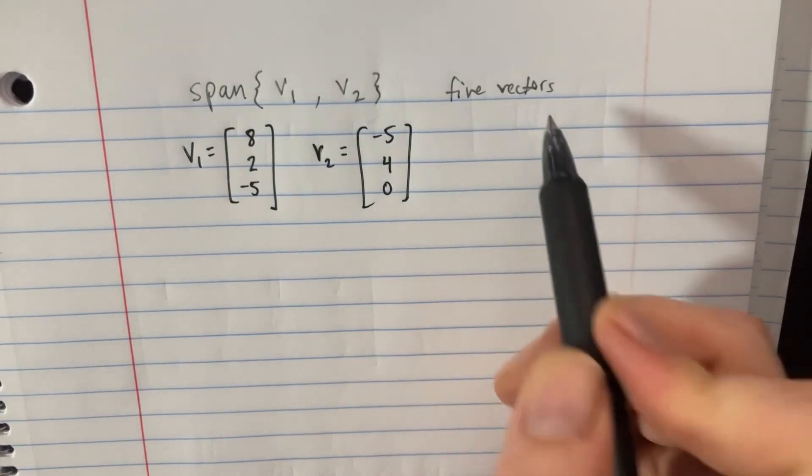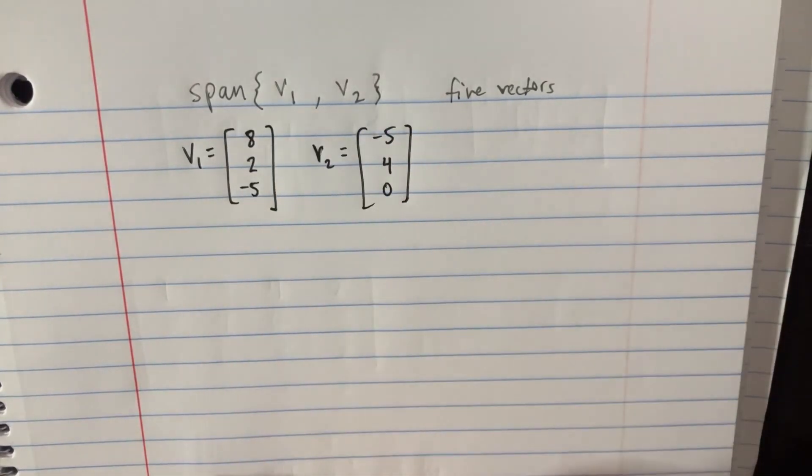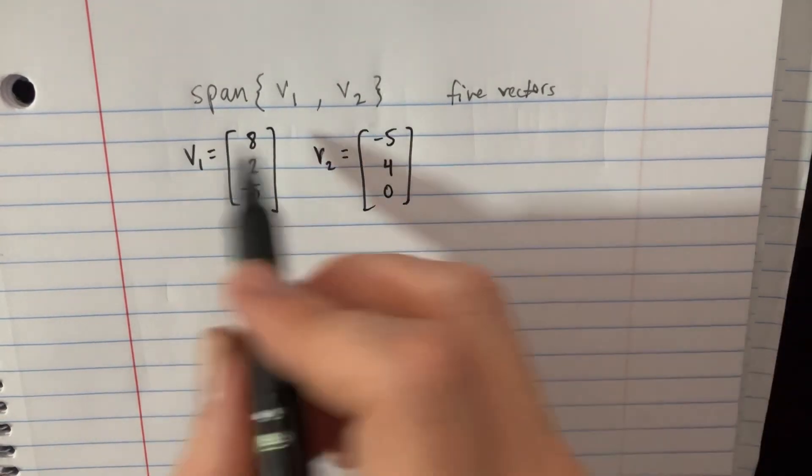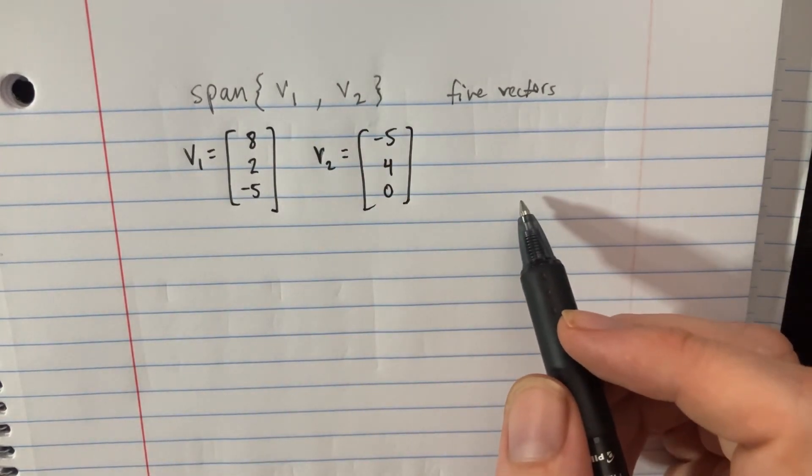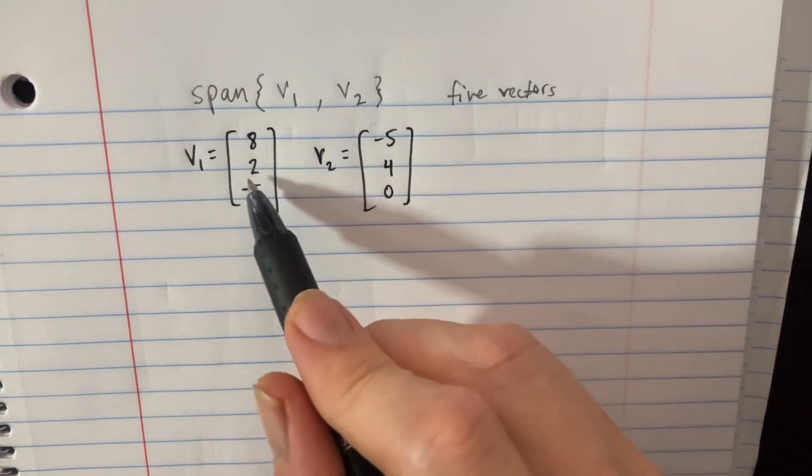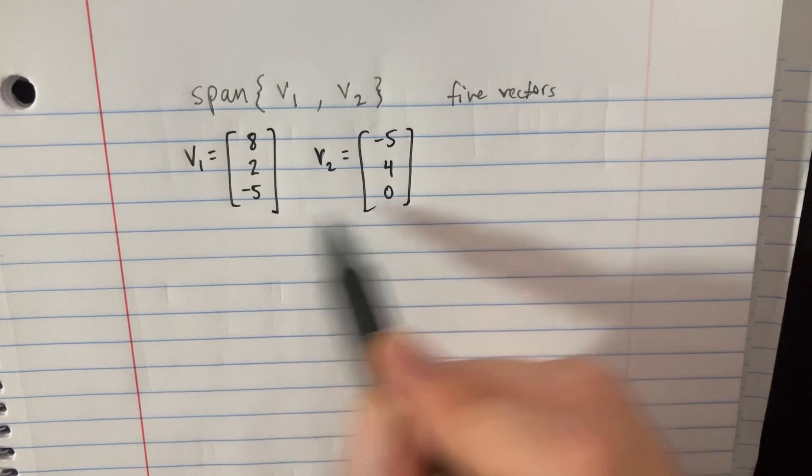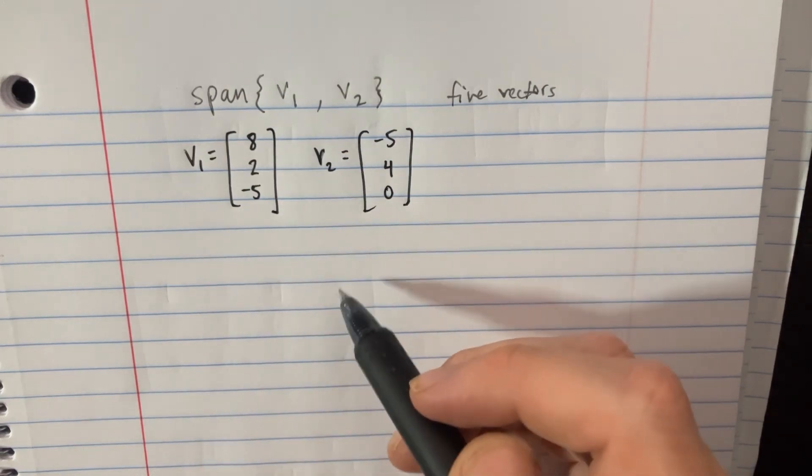If we're trying to find five vectors within this span of v1 and v2, we're given the two vectors, v1 and v2. What this is really asking is what are all the possible answers that we can get if we were to add these two vectors up with some coefficients next to them.